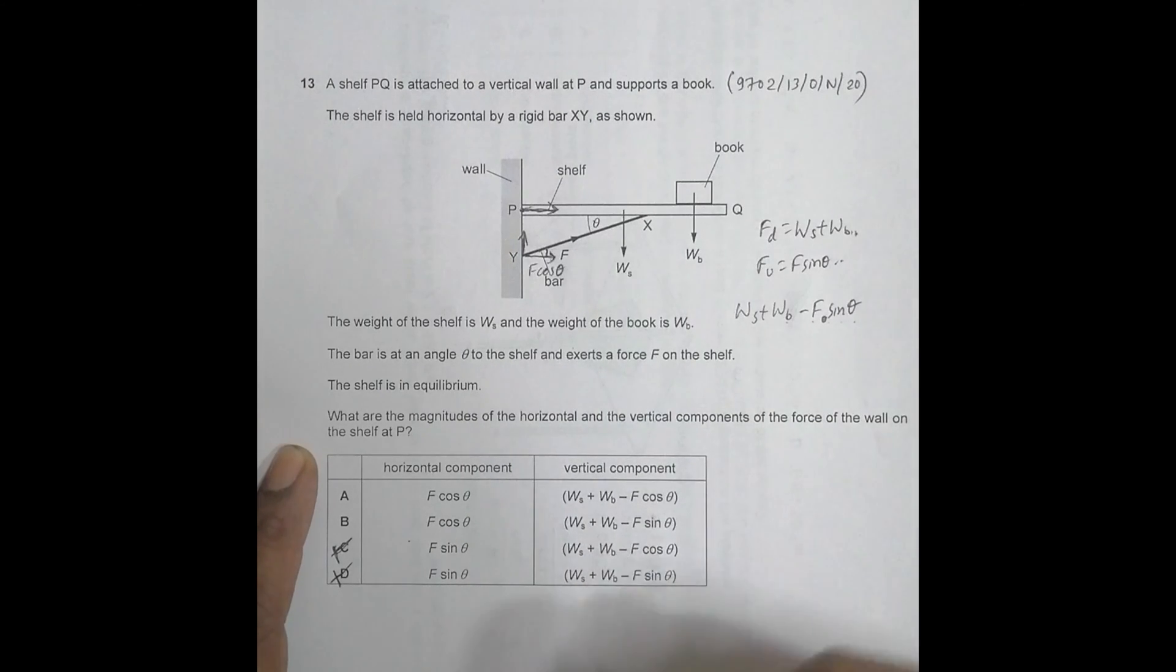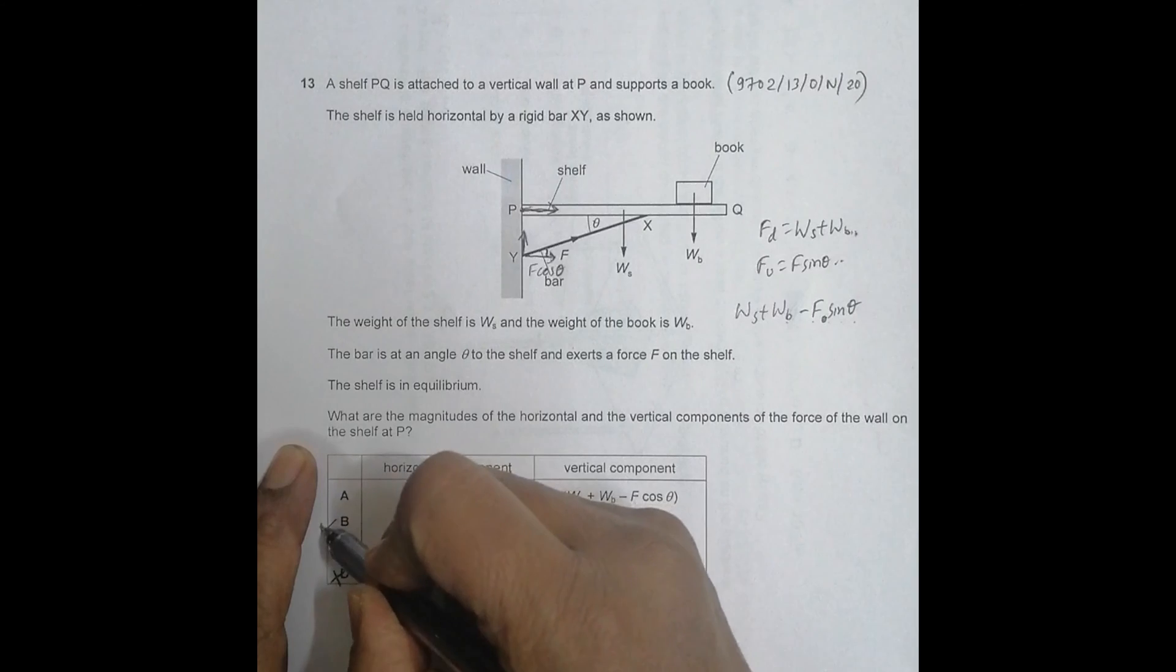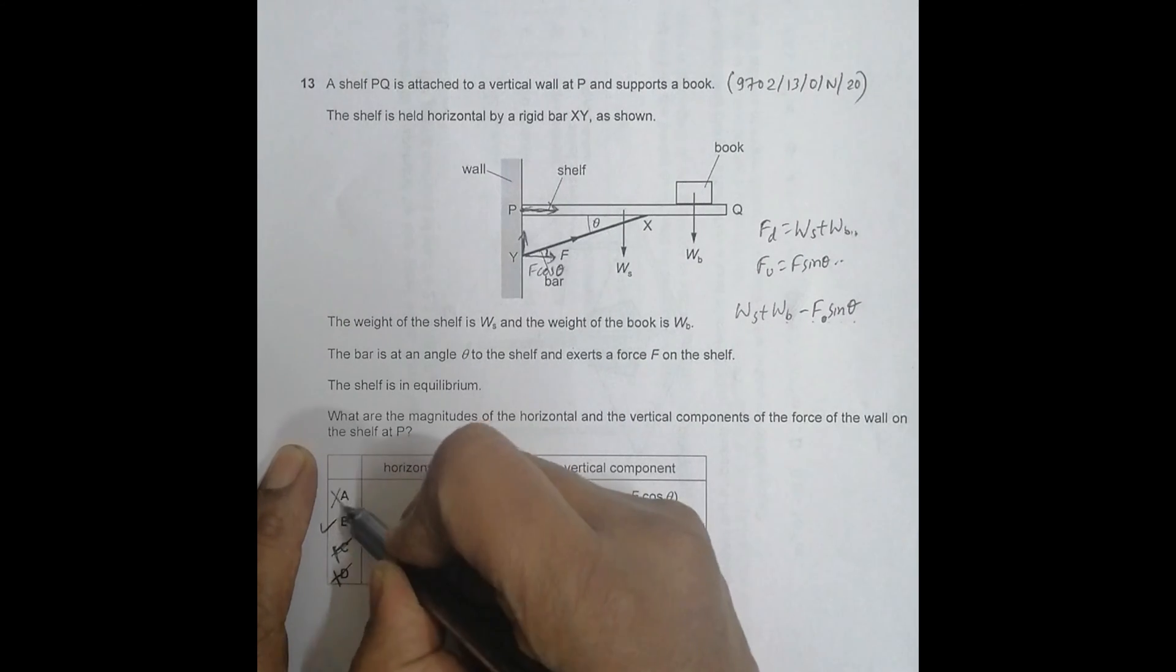So it is choice number B. Choice number A is also not correct here.